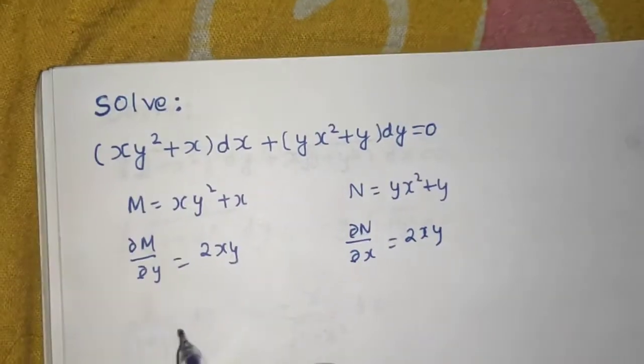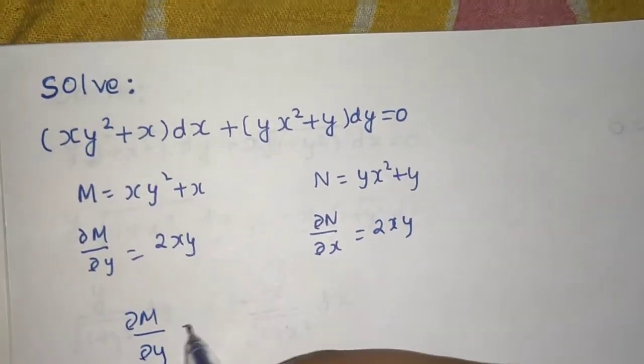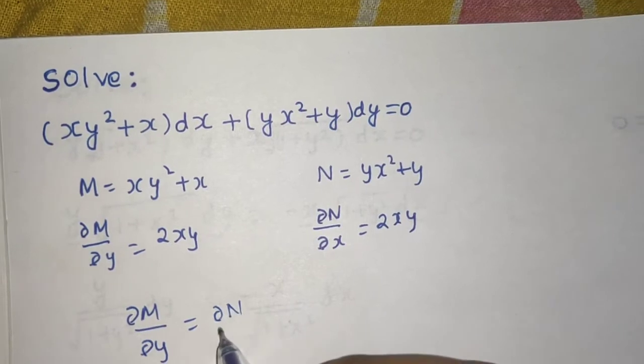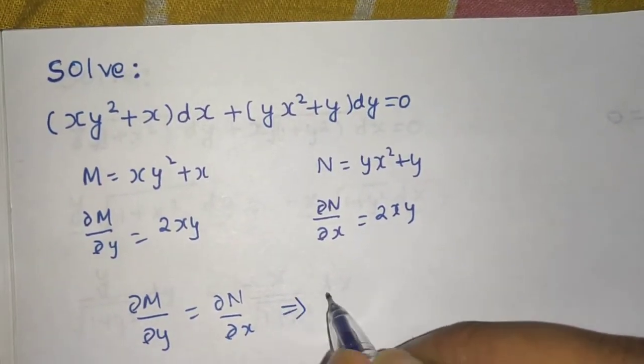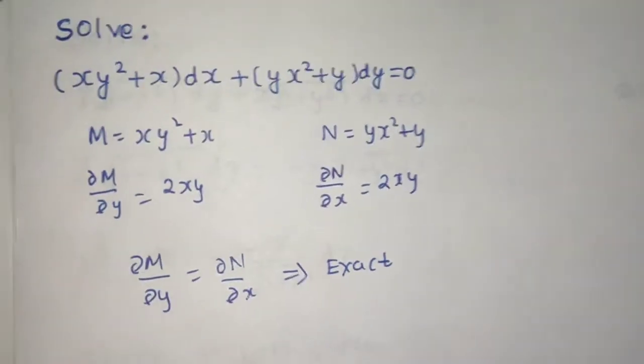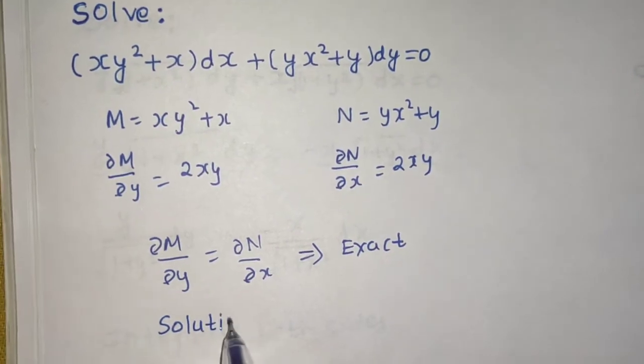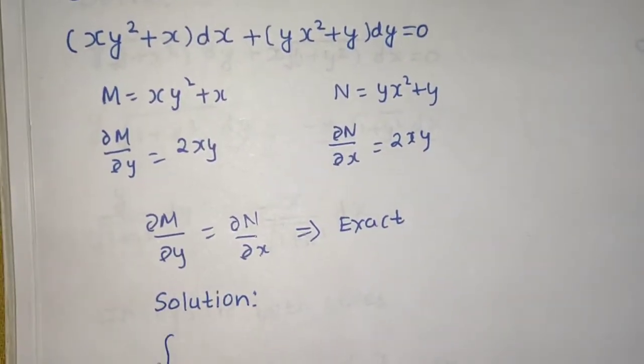Since ∂M/∂y equals ∂N/∂x, this signifies that this is an exact differential equation. And in case the equation is exact, we can easily write the solution as integral of M dx plus integral of N dy equals to C.